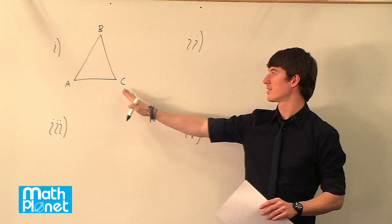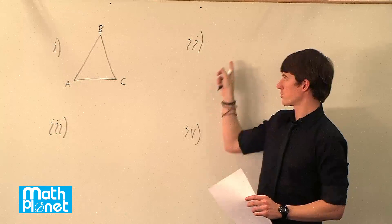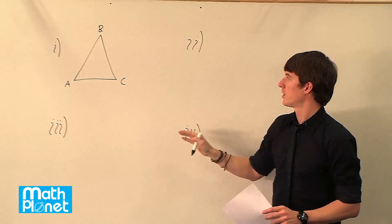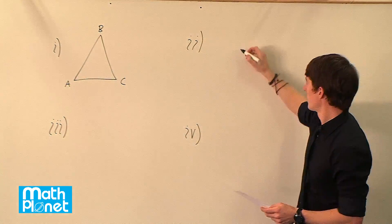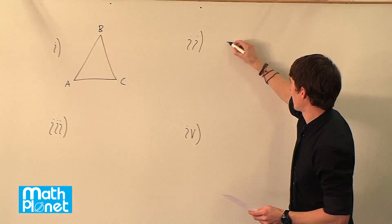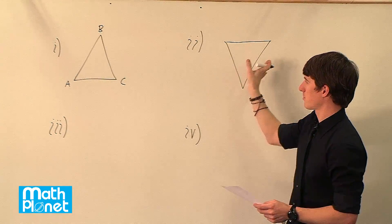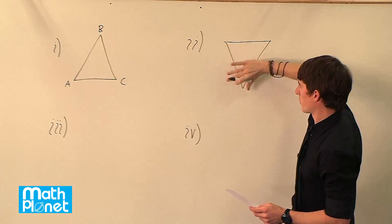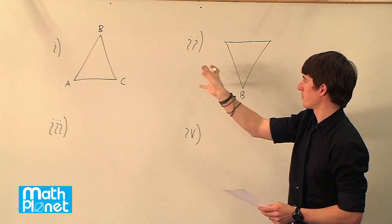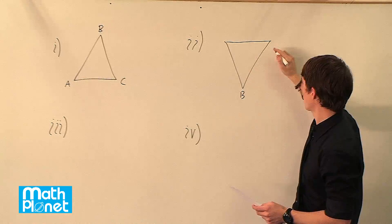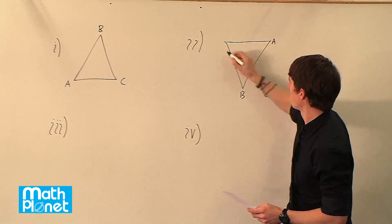We have our original triangle ABC here, and we're going to do a couple of things to it and then just redraw it. So if we have this triangle and we want to rotate it, perhaps we can draw it like so, just very roughly. I want to maybe flip it around this way. So this will be B, and then I've turned A, so A is now here, and C is here.